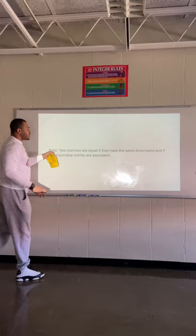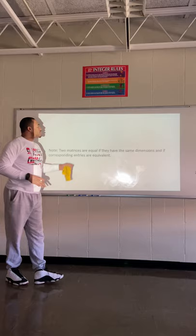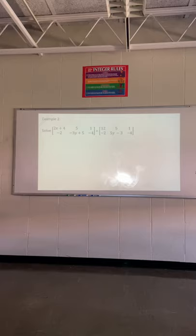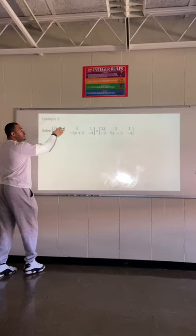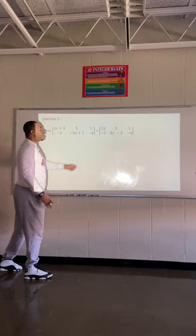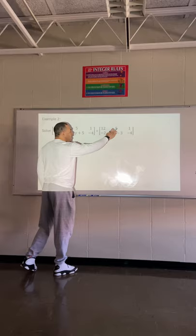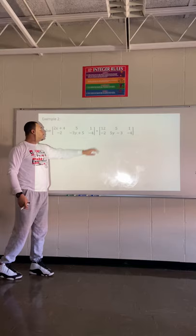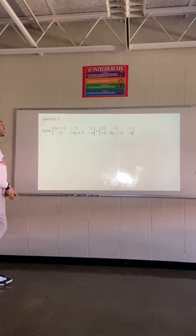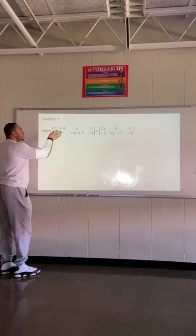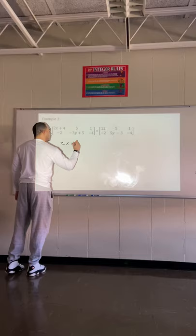One important thing about matrices is that each corresponding entry is always equal to each other. On our next slide, all you have to do is solve for the variables. In this example, 2x + 4 has to be equal to 12, just like 5 equals 5, 1 equals 1, negative 2 equals negative 2. And negative 3y + 5 is going to be equal to 5y − 3. So I need to figure out what these variables are equal to by setting the corresponding entries equal to each other.